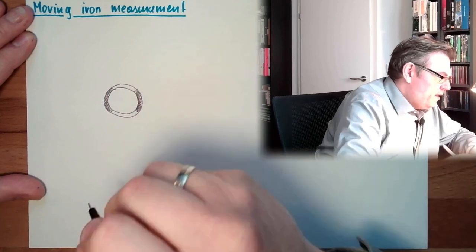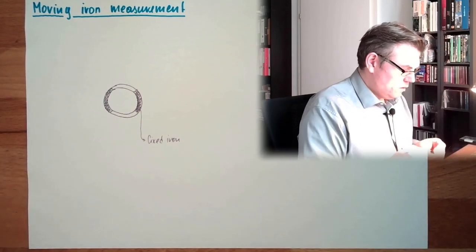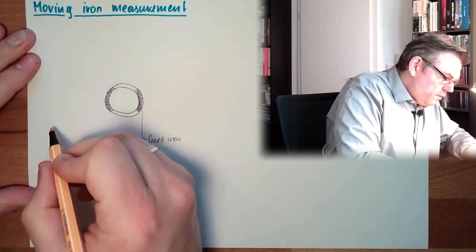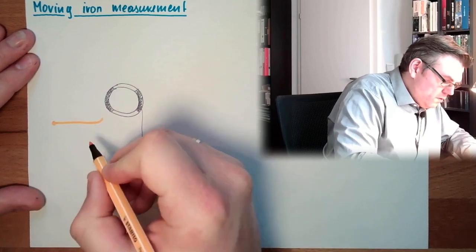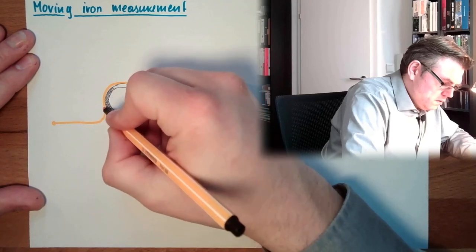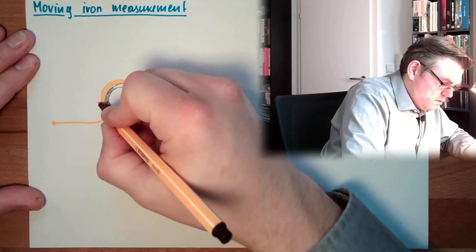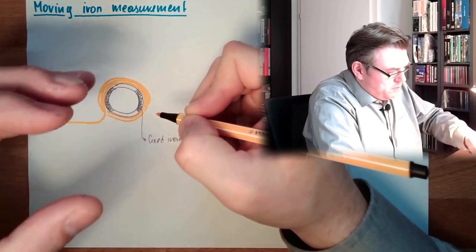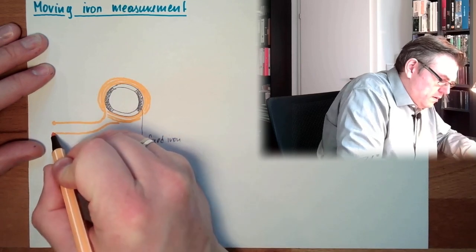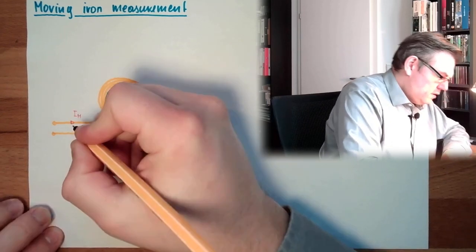Fixed iron. Wrapped around this tube, we have a coil. I will try to show it somehow. I don't know how many windings, it's wrapped around this tube here. And then we are coming back here. Here is the measurement current. Here is the measurement voltage.